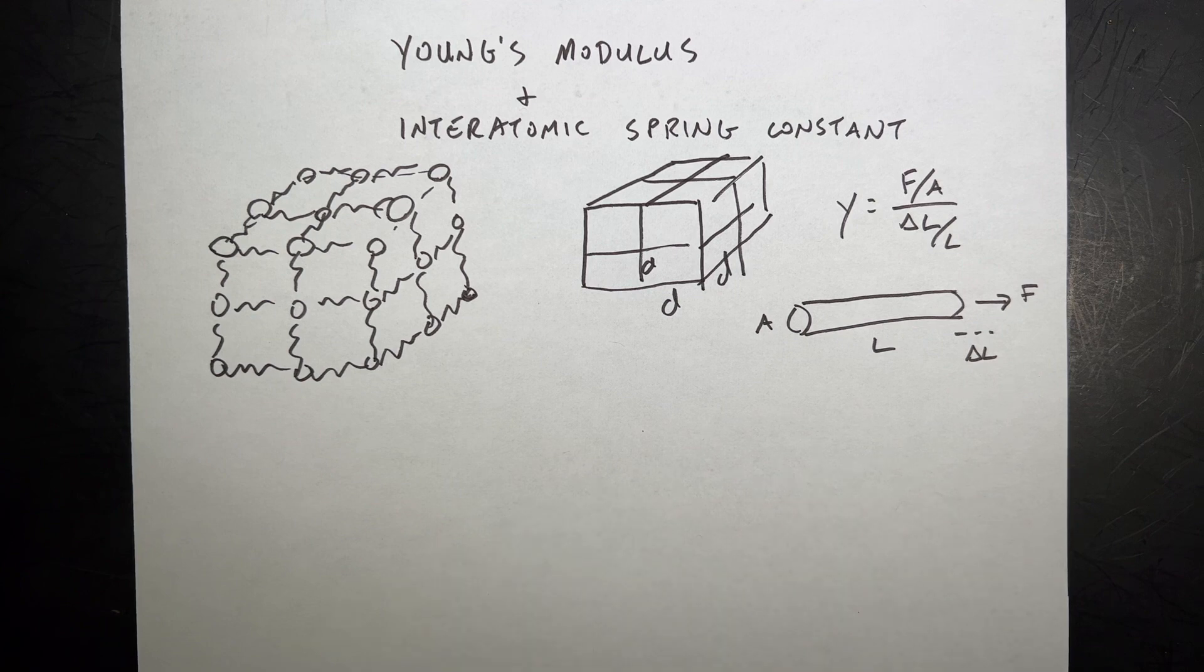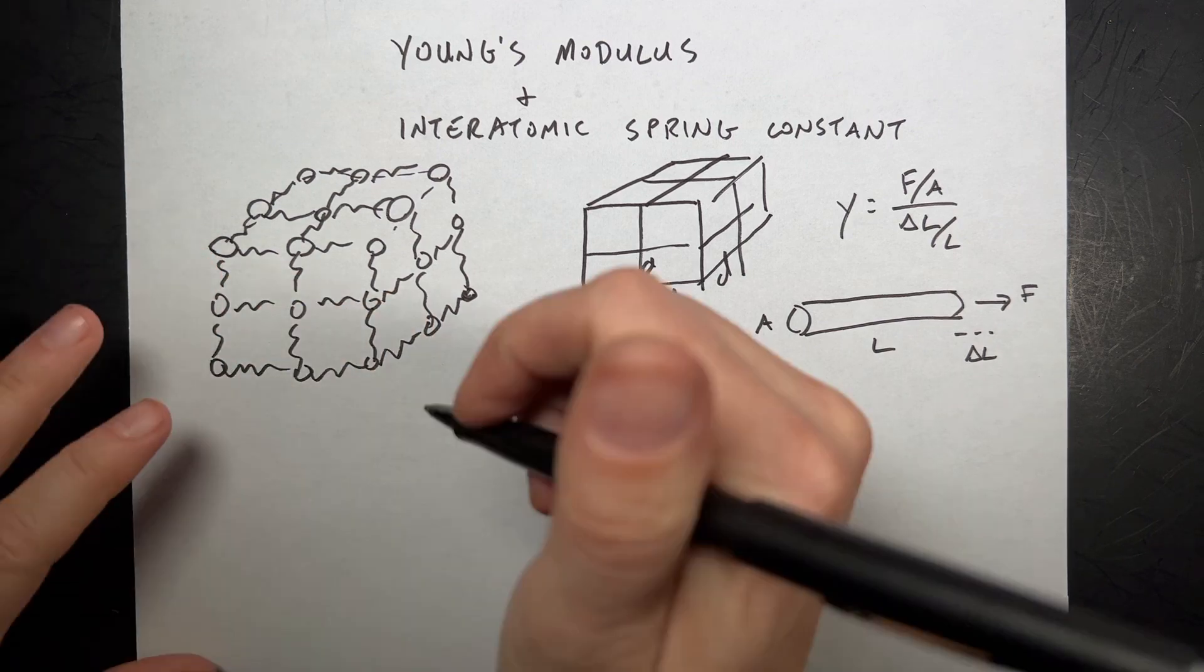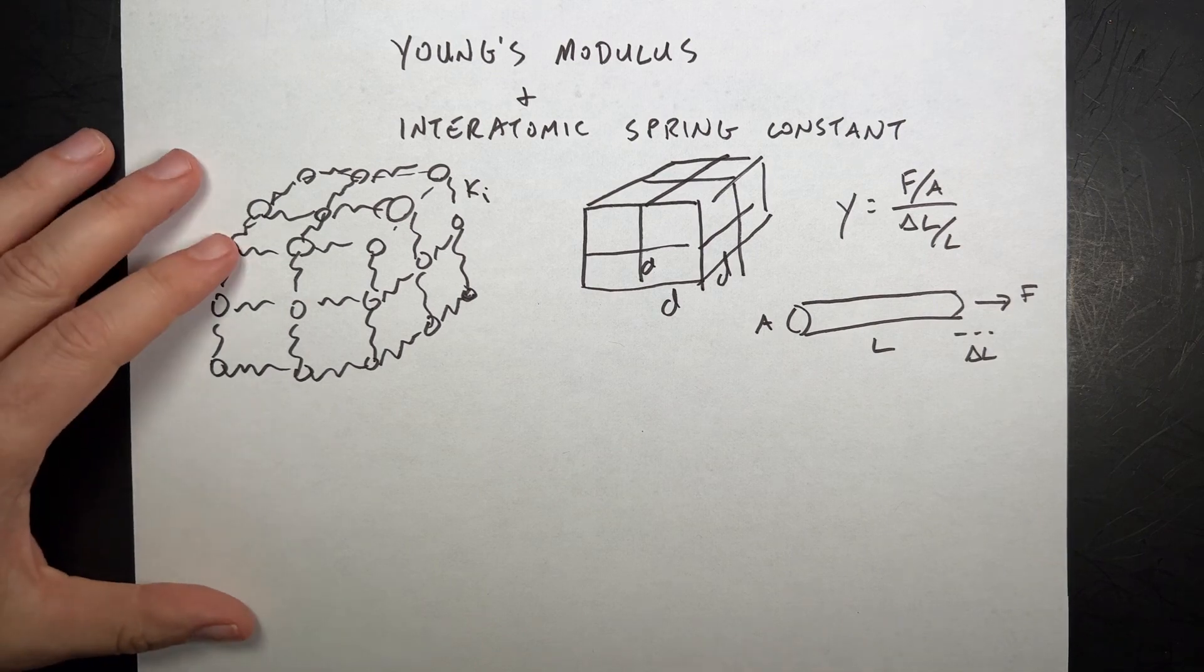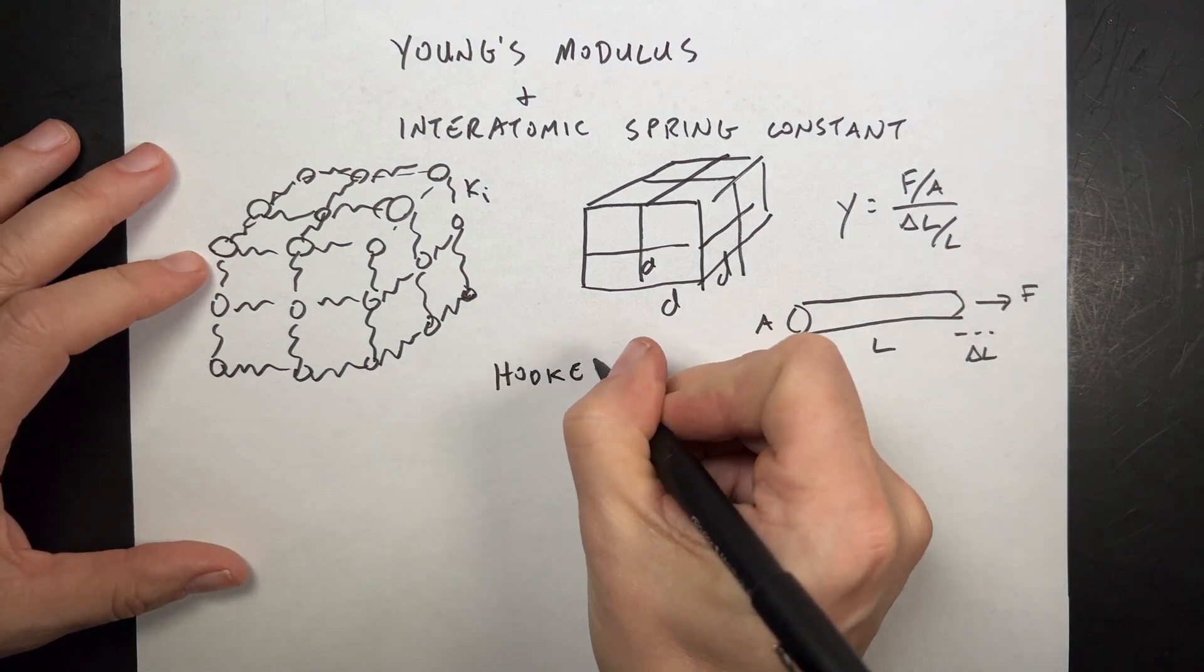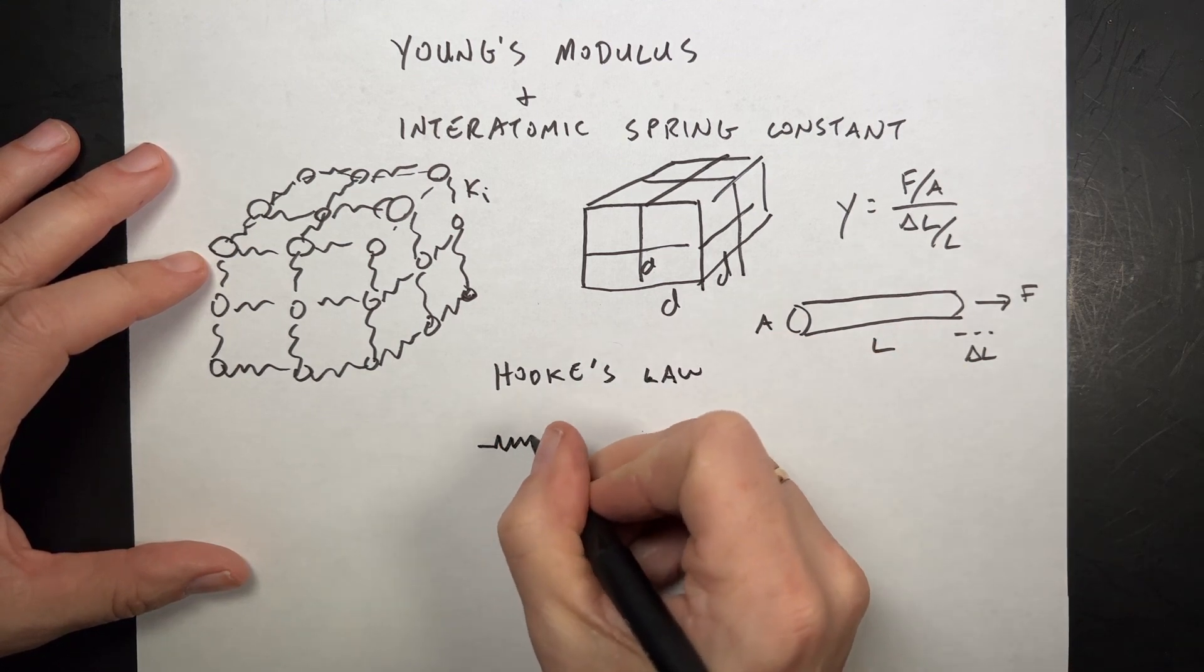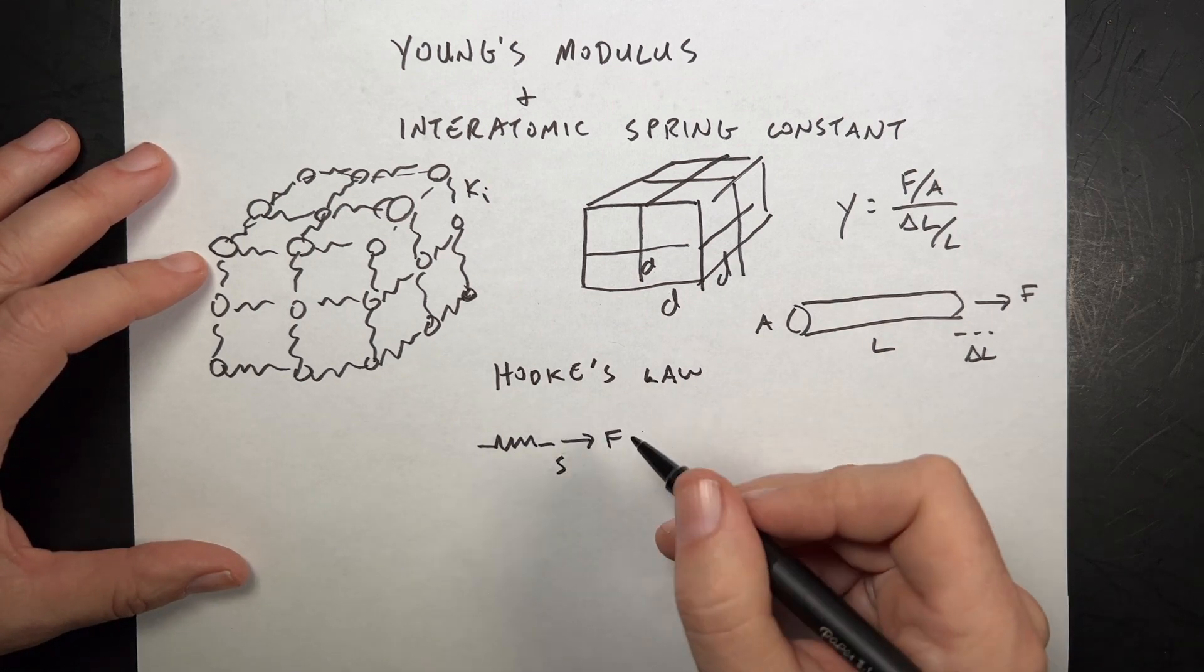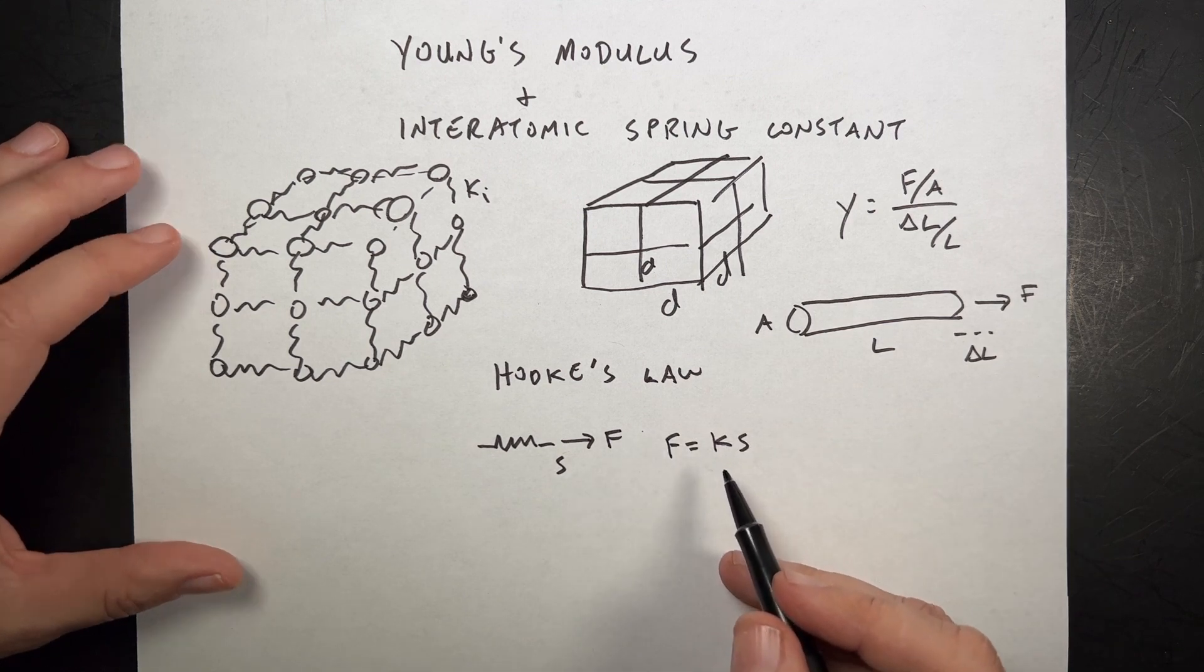Now, what we want to do is to relate that to this interatomic spring constant. I'll call that Ki. That's the spring constant in between masses. Now, we need to know something about springs first. We have the basic version of Hooke's Law. This says that if I have a spring and I apply some force F, then it's going to stretch some amount S. And the relation between those is F is K times S, where K is a spring constant.